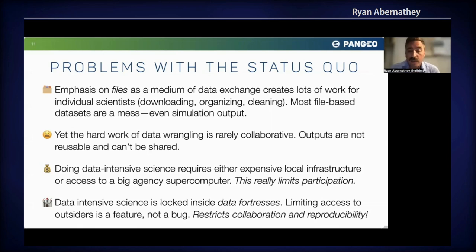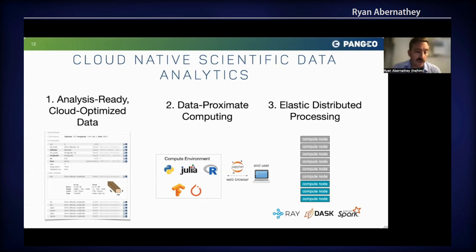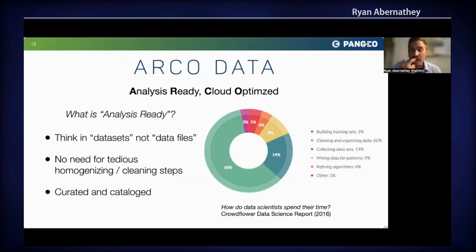I'm excited about the potential of cloud computing to change the status quo and usher in a new era of more collaborative and open scientific research. By cloud, I just mean some place out on the internet where you can do your work rather than downloading everything onto your own computer. Such a cloud environment should offer three basic capabilities in order to support arbitrary analytic workflows on big data: we need analysis-ready cloud-optimized data, we need data-proximate computing — the ability to bring computing close to the data rather than downloading the data — and we need elastic distributed processing capability if we want to scale out and work with data at petabyte scale.